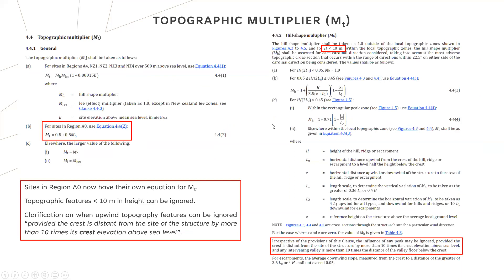The topographic multiplier is mostly unchanged, minus the change for region A0 in Australia which has its own specific equation. Topographic features less than 10 metres in height can now be ignored, which helps remove a lot of unnecessary empty calculations. A final clarification: the previous version used to say 10 times the elevation above sea level without clarifying whether it was the site elevation or the topographic crest. This is now confirmed to be the crest elevation above sea level of the topographic feature under consideration, not the site elevation.